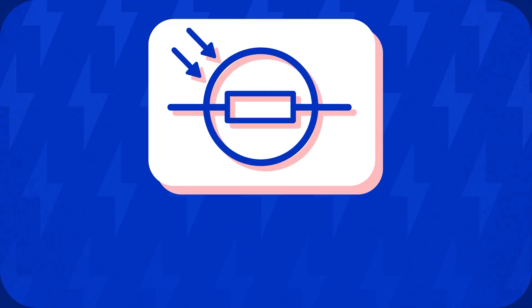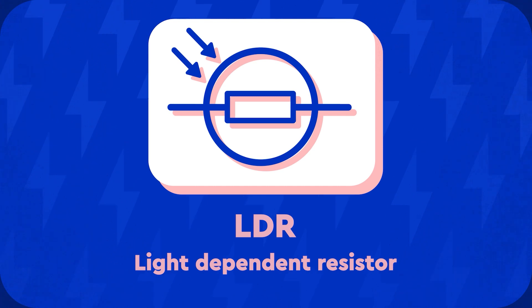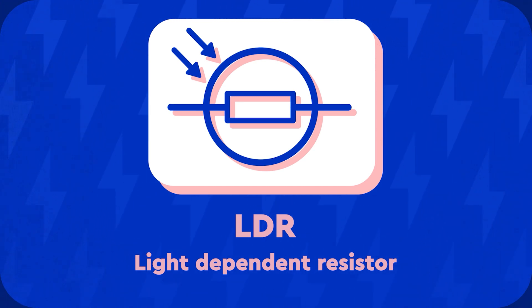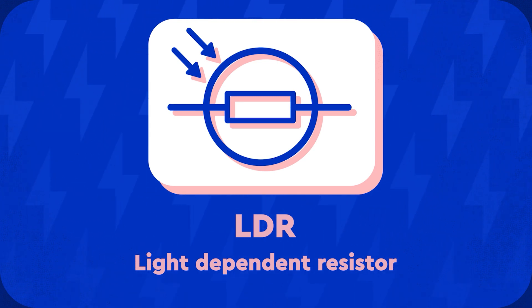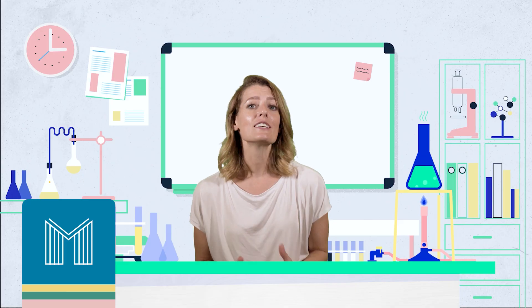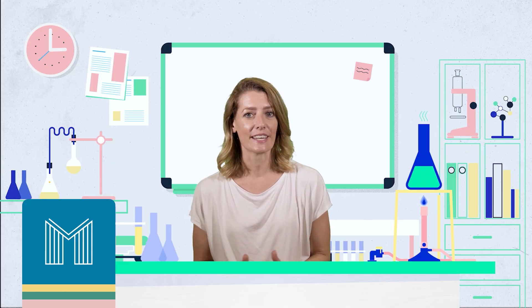An LDR, or light dependent resistor, is another special type of resistor. At high light intensities the resistance of the LDR is low, and as the light intensity decreases the resistance of the LDR increases. Light dependent resistors can be used to turn lights on automatically when it gets dark.